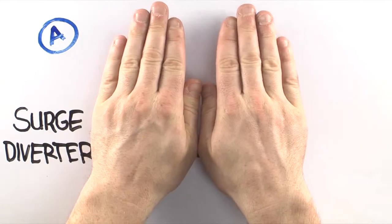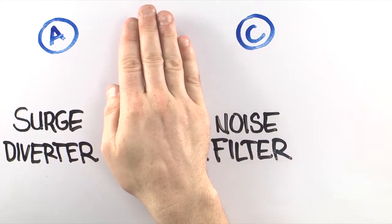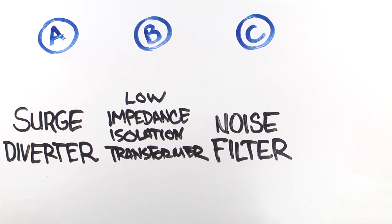Some power protection devices have a surge diverter, some have a filter, and some have both. But without a low impedance isolation transformer, you don't have complete protection. In fact, they can actually cause the disturbances that lead to downtime.